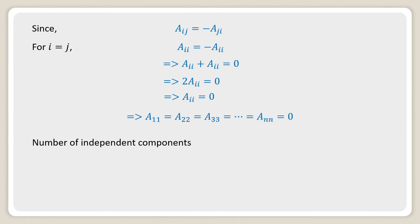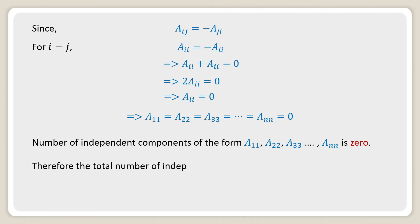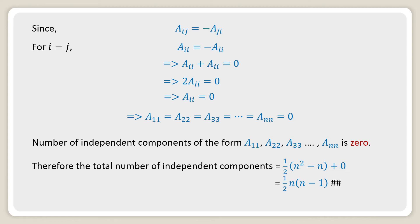The number of independent diagonal components of the form a11, a22, ... ann is 0. Therefore, the total number of independent components equals half of (n squared minus n) plus 0, that is, half of n(n minus 1).